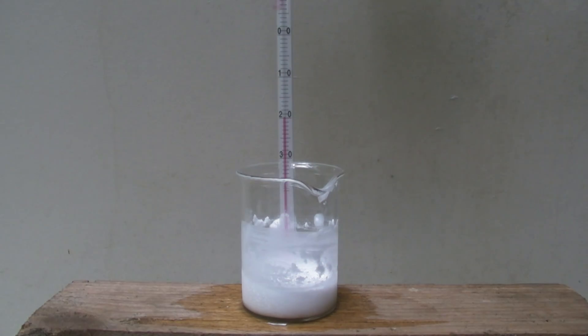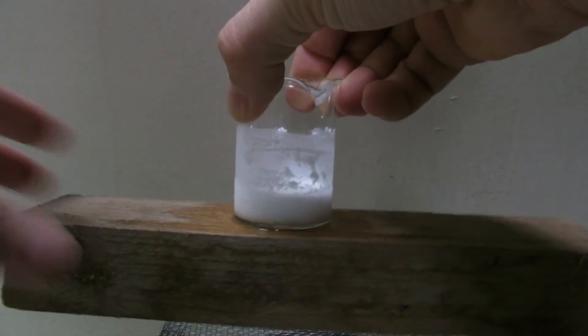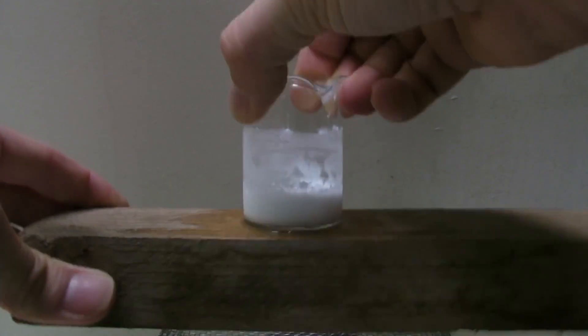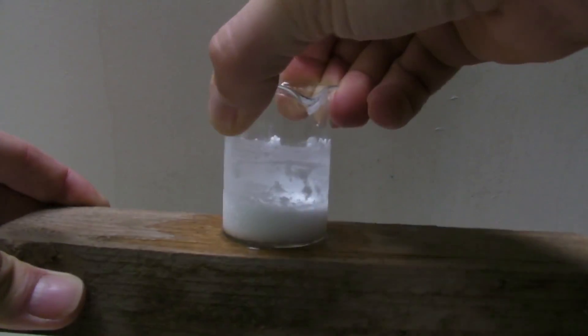The explanation for the drop of the temperature is a bit more complicated so it will be discussed in the next video. This was the reaction of barium hydroxide and ammonium chloride. I hope you enjoyed. Please rate and comment.